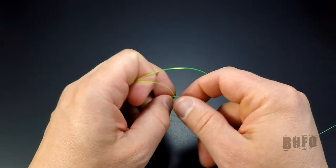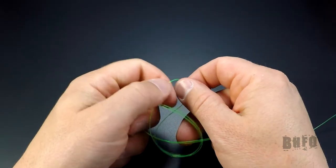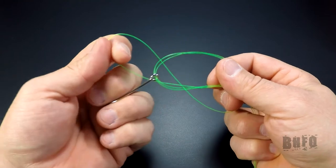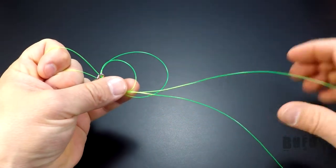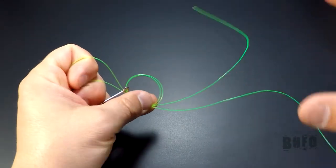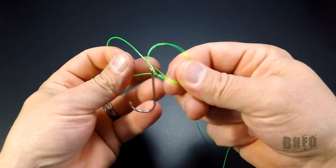Tie the loop and the mainline with the tag together using an overhand knot. Take the lure or hook and put it through the original loop.